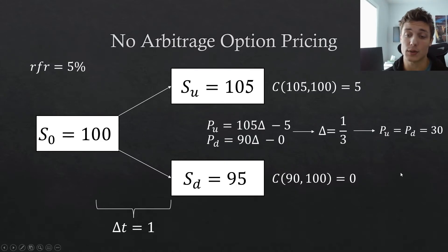We can go ahead and do exactly that. As you can see here, we're going to set 105 times delta less five equivalent to 90 times delta less zero. And if you solve for delta, you're going to get one third. And in either case, if you set delta equivalent to one third, then you are going to get 30 for the portfolio value. So this is actually pretty cool, right? If the stock price were to increase or decrease, we would know that our portfolio value would be 30 in either state of the world.